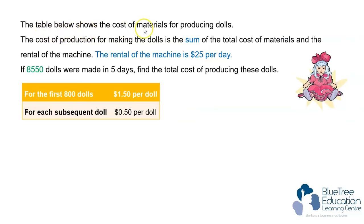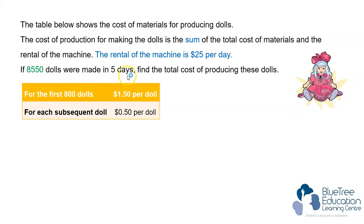The table below shows the cost of materials for producing dolls. The cost of production for making the dolls is the sum of the total cost of the materials and the rental of the machine. The rental of the machine is $25 per day. If 8,550 dolls were made in 5 days, find the total cost of producing these dolls.